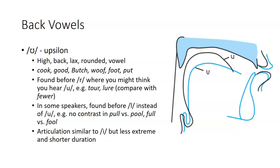In some speakers, the u sound is found before L instead of oo, so in their dialect they don't have a contrast between pull and pool or full and fool, which is a contrast I do have. The articulation for u is similar to oo but less extreme and shorter in duration.